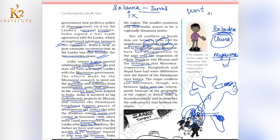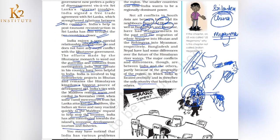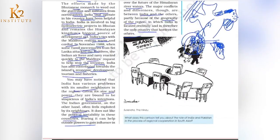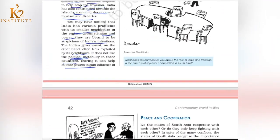Most of the major conflicts in this South Asian region are between India and other countries, mainly because of geographical reasons — India is centrally located and the only country that shares borders with all others: Pakistan, Nepal, Bhutan, Bangladesh, Sri Lanka, and even Maldives through shared ocean territory. India plays a major role in the South Asian world. I hope the topic was clear to you. Thank you so much for watching.